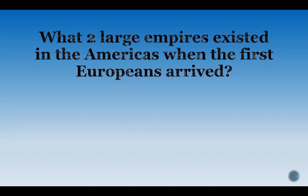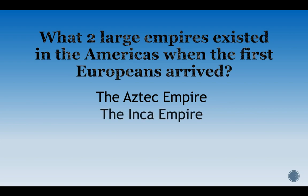Here's a trivia quiz to see how many of these questions you know and how well you know world history before learning about it in greater detail. Feel free to pause between each question. First question: what two large empires existed in the Americas when the first Europeans arrived? The answer is the Aztec Empire, which was in Mexico, and the Inca Empire, which was in South America, modern-day Peru.